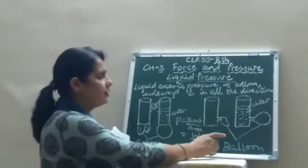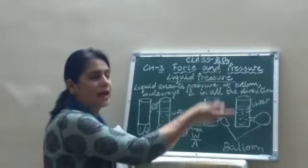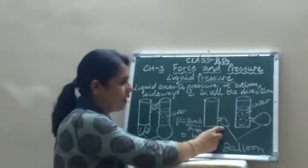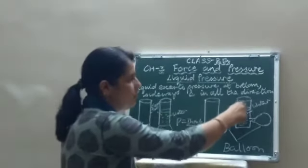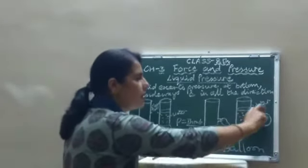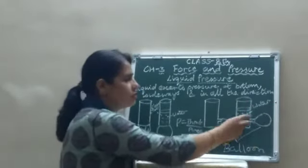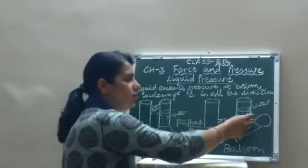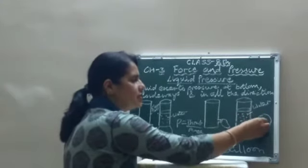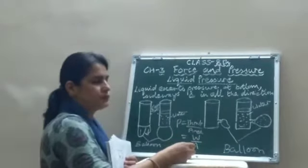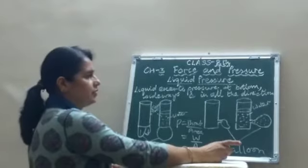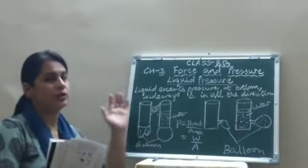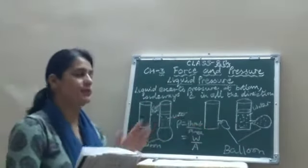This next activity proves that liquid also exerts pressure sideways. We take a glass tube with a side opening and tie a deflated balloon at that opening. When we pour water into the tube, the balloon bulges out. The water exerts pressure and fills into the balloon, proving that liquid exerts pressure sideways as well as downward.